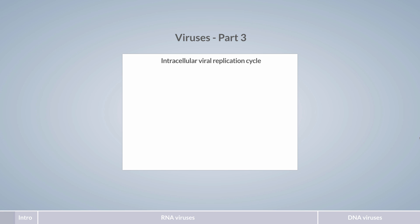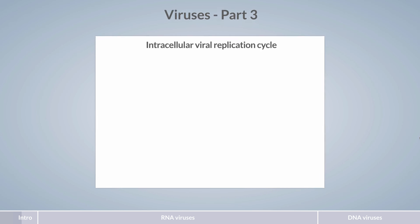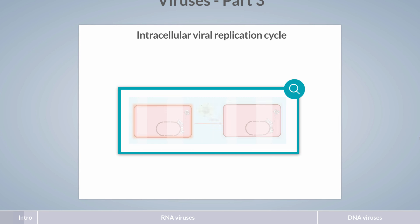What intracellular processes are involved in viral replication? Viruses are transferred as particles, known as virions. Once the virion enters a host cell, it disassembles and the viral genome begins to interfere with cellular processes.